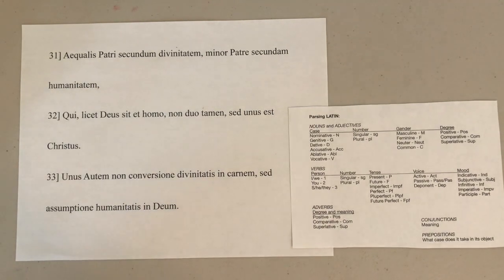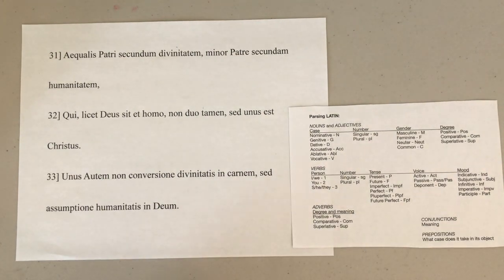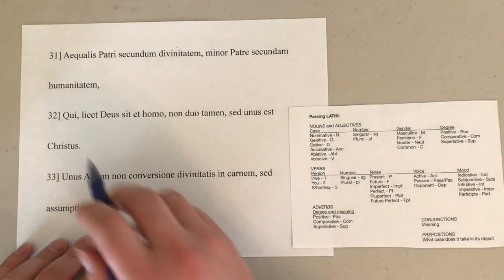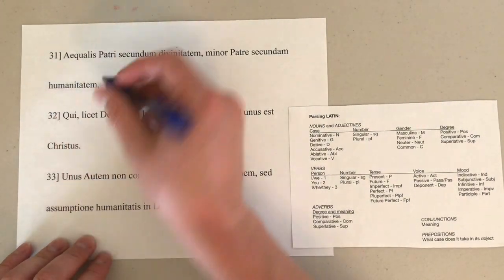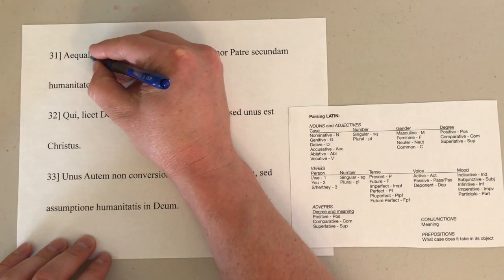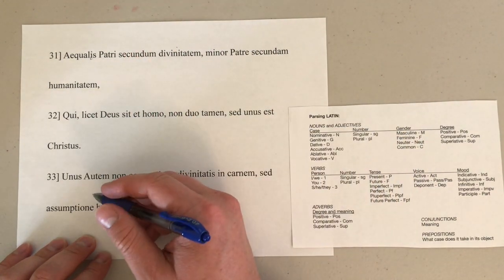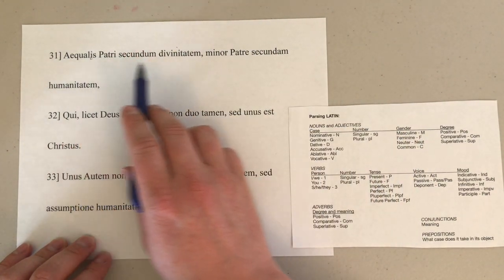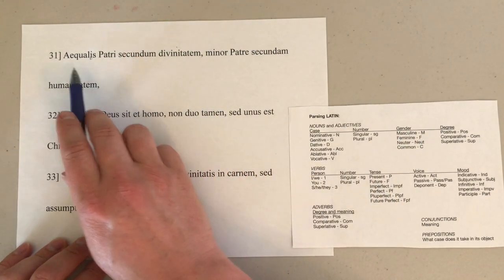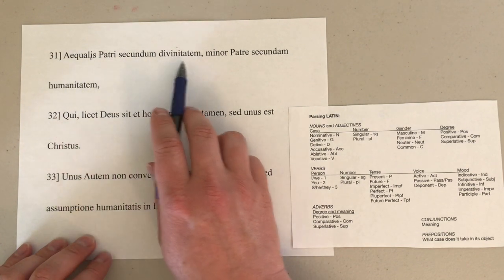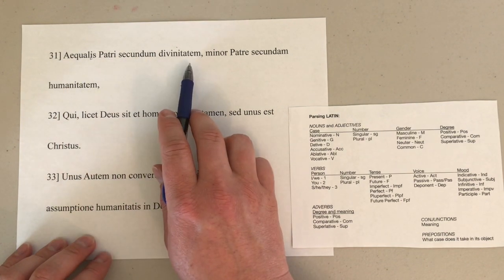There we have it. Continuing on from what was said in verse 30, here we have aequalus, which has the -is ending there from the third declension adjective. And we see no verb, so that means that we're going to have to assume a verb. And est is the most likely one.